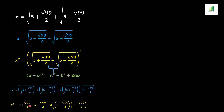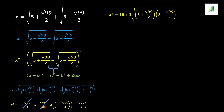We can see that +√99/2 and −√99/2 cancel each other out. In the next step x² remains the same, and the two 5s add together to give +10, while the remaining multiplication term stays the same.